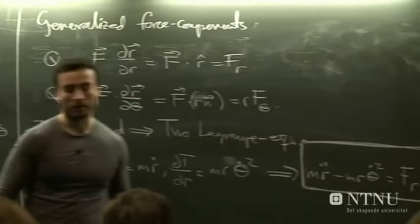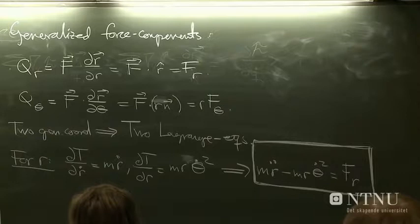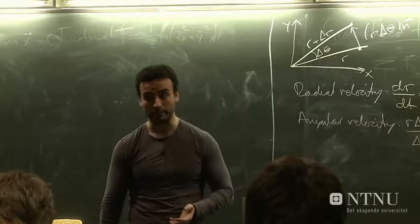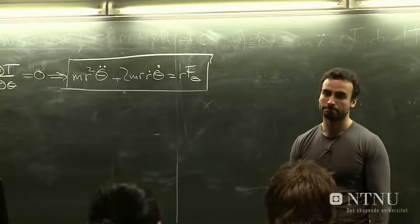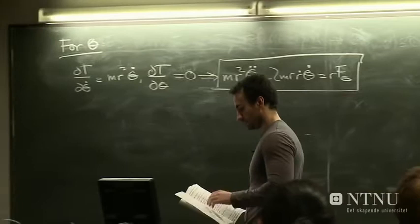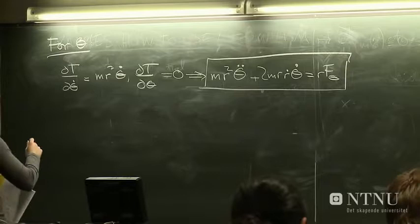And so this should be equal to the generalized force associated with the generalized coordinate theta, which we derived over there to be equal to rf theta. And this gives us a complete description of the system. These two equations, this one and this one, are the two equations of motions that we can use to solve for r and theta, define r and theta as a function of time, which would describe exactly how the particle moves. If we know r as a function of time and theta as a function of time, we would know exactly how the particle behaves. So to do this, we would have to know the mass of the particle and also the forces, fr and f theta, if they exist, which acts in the particle.